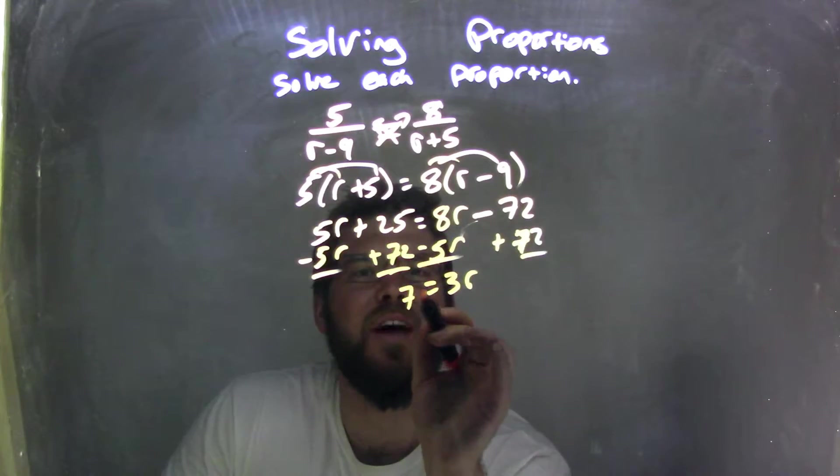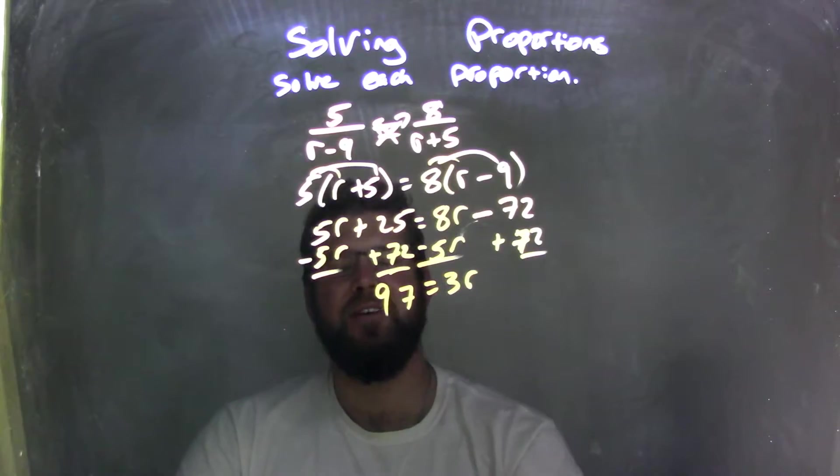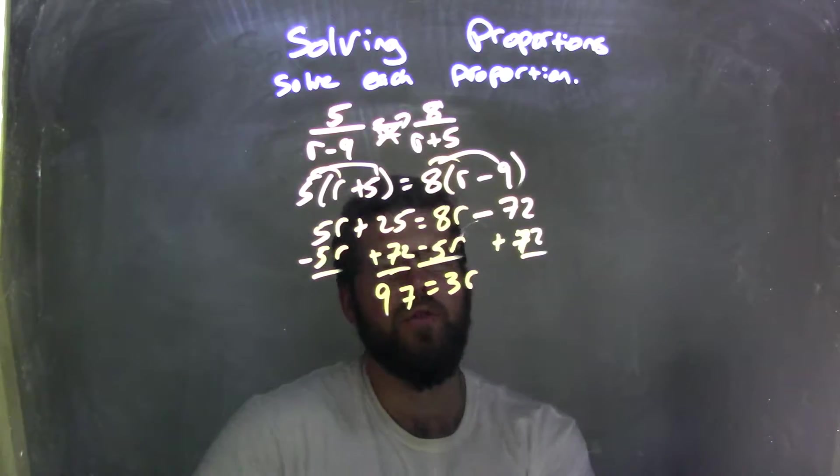And 25 plus 72, 5 plus 2 is 7, 7 plus 2 is 9. So I have 97 here. Okay, so 97 equals 3r.